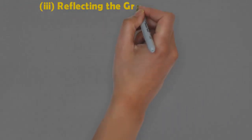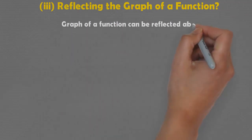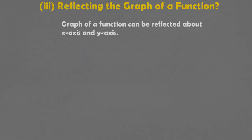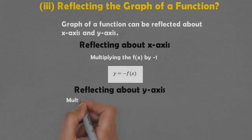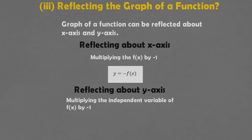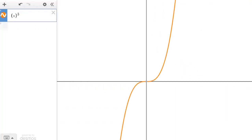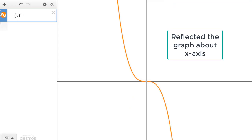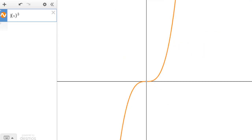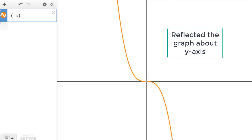Reflecting the graph of a function about the x-axis is done simply by multiplying the function by -1. Similarly, the graph can be reflected about the y-axis by multiplying the independent variable by -1. For example, with f(x) = x³, multiplying the function by -1 reflects the graph about the x-axis, and multiplying x by -1 reflects the graph about the y-axis.